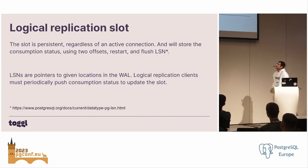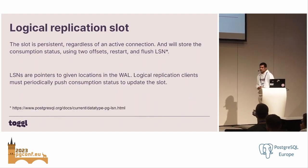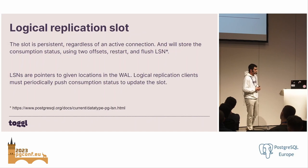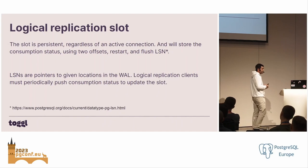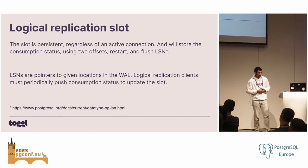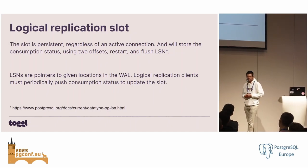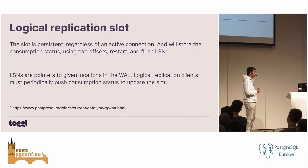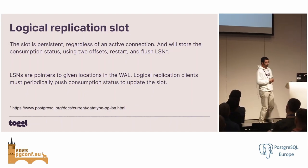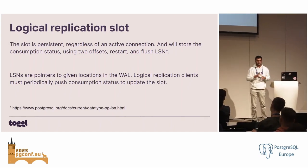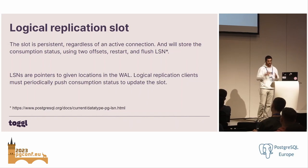To make our logical replication client work, it needs a replication slot — same as any other client application, including Postgres itself. One of the replication slot's responsibilities is to keep track of replication consumption by its client. That tracking is done using LSNs — log sequence numbers — which are numeric, incremental values that point to a given location in the WAL file. That's the sequence you need to keep track of in order to report your logical replication consumption to your replication slot.